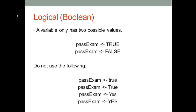There is a third type of variable we use frequently in R: logical variables, also called boolean variables. A logical variable can only have two possible values — either TRUE or FALSE — and every letter must be in uppercase. We cannot use lowercase true or false. Additionally, yes, no, good, or bad are invalid values for a logical variable in R; only TRUE or FALSE are accepted.